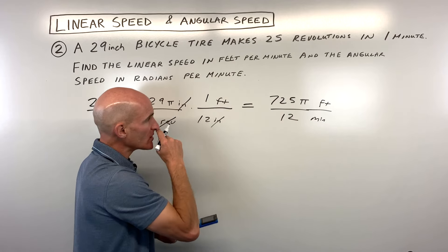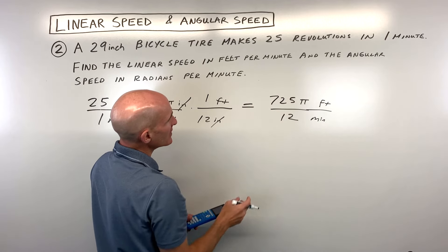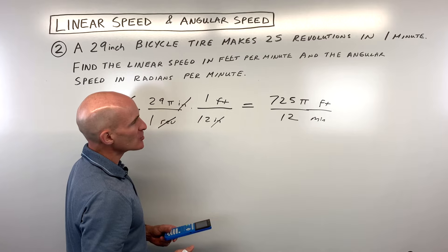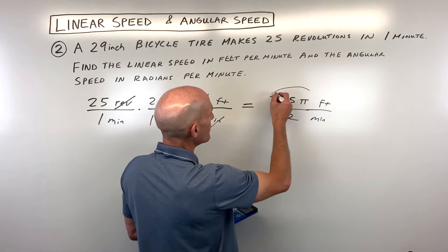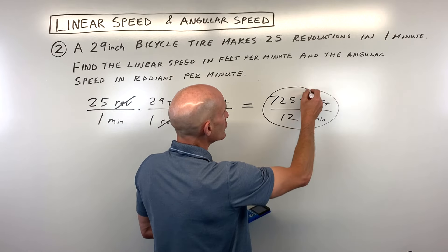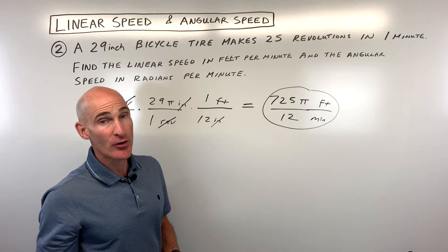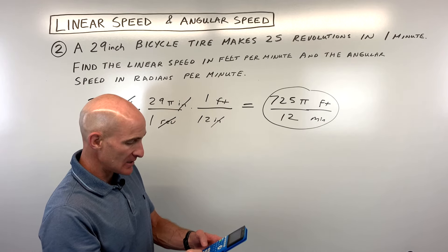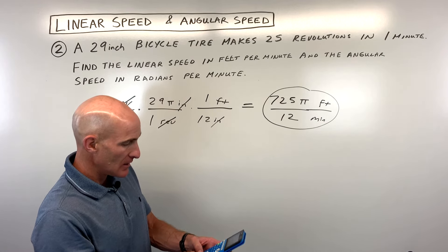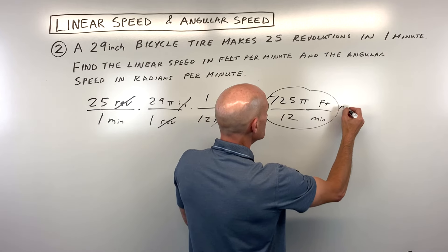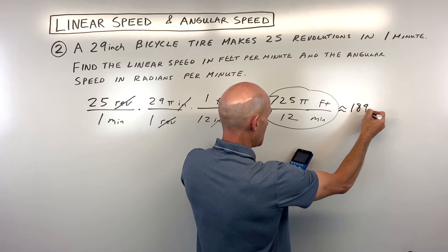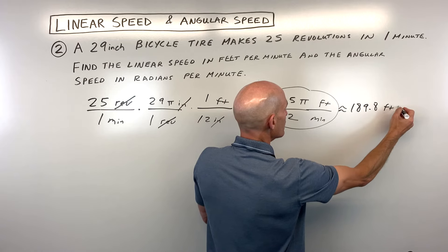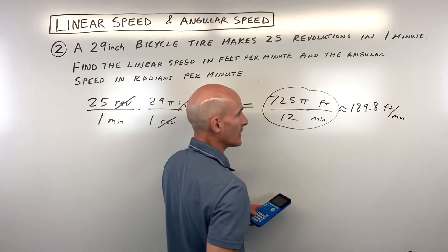Notice we can try to reduce — but 725 and 12 don't share a common factor, so 725 pi over 12 feet per minute is the exact answer. If we want an approximation using the pi key, that comes out to approximately 189.8 feet per minute.